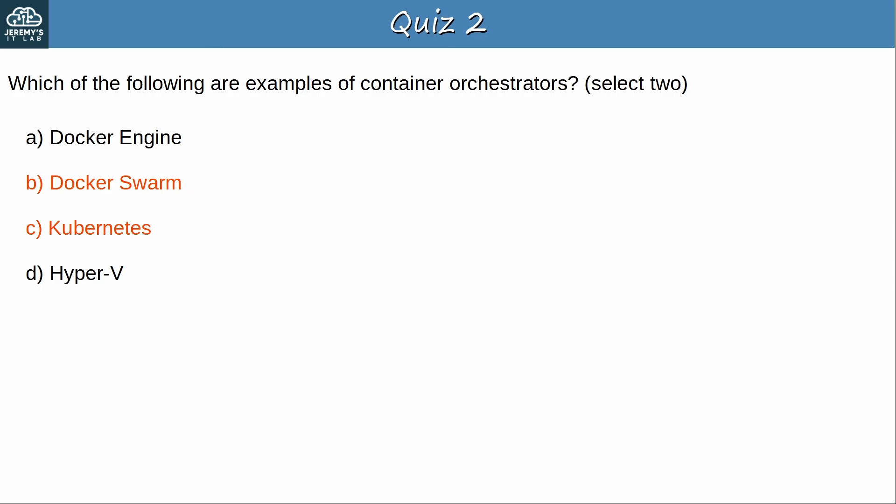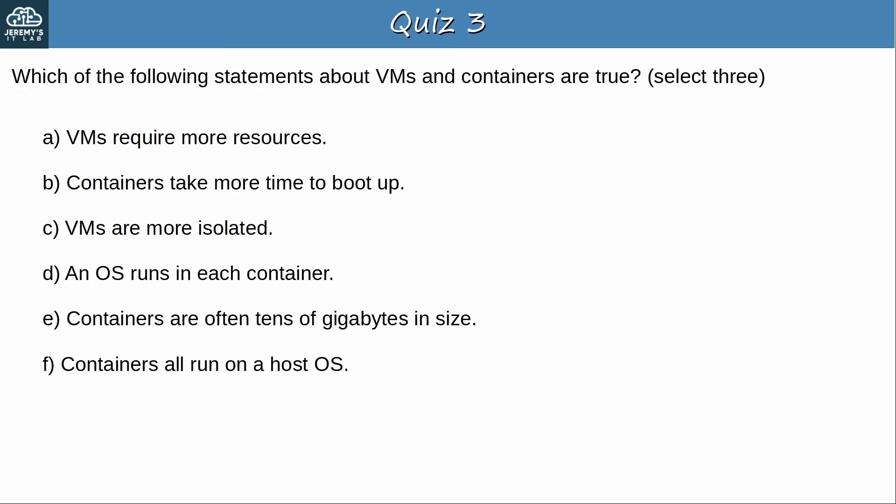Question 3: Which of the following statements about VMs and containers are true? Select 3. The answers are A, C, and F. VMs require more resources than containers because each VM runs its own OS. VMs are more isolated than containers, again because each VM runs its own OS. Containers, on the other hand, all run on a host OS with a container engine installed on top of it.